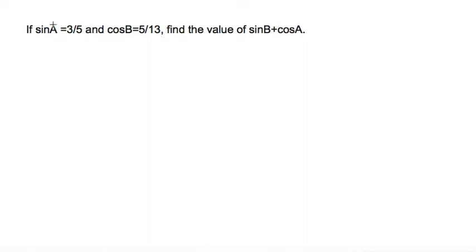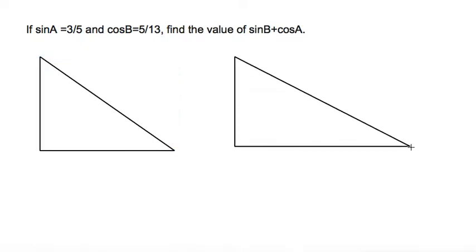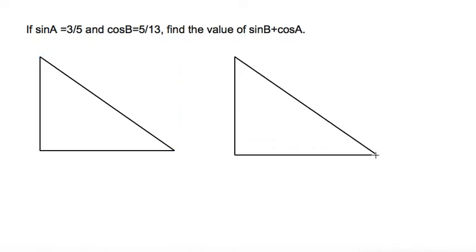We can assume that each one of these trig ratios is from a right triangle, so let's draw a couple right triangles. Let's make one a right triangle with an angle, let's say that this is angle A, and let's say that this is angle B.